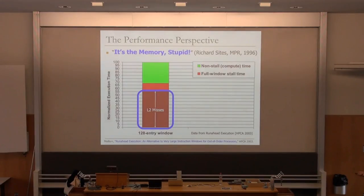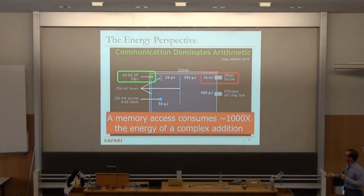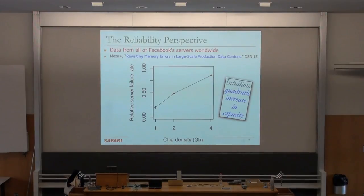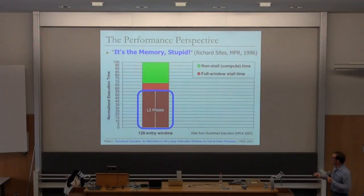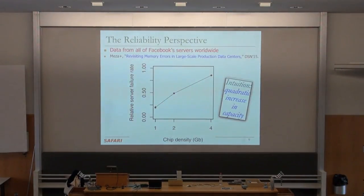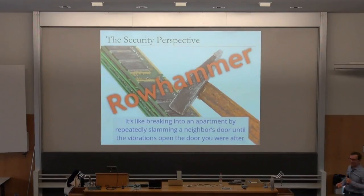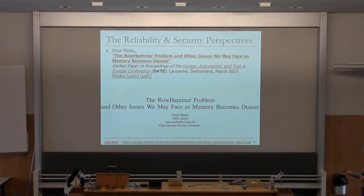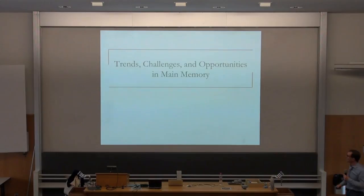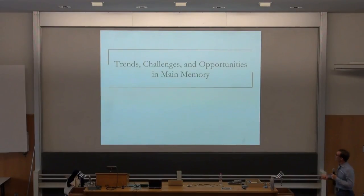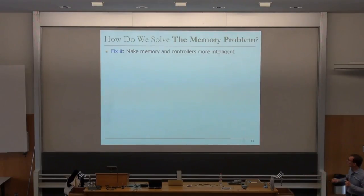We talked about some trends, challenges and opportunities in main memory. This is one slide that we covered: it's the memory stupid. People know that for a long time, but maybe we need to do something about it. Energy perspective, reliability perspective — reliability is becoming worse, energy is becoming worse. Performance is also becoming worse because we're designing better processors, but they're still waiting for memory. And security is becoming worse. I recommended some papers — you should look at the previous lecture. The last slide we ended up with: basically, how do we solve the memory problem?